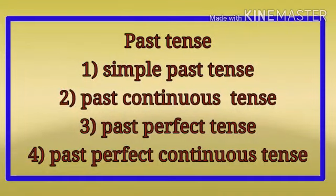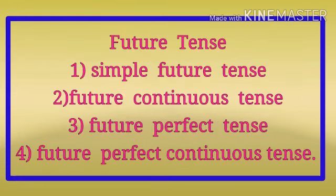Similarly, Past Tense has four sub-types: Simple Past Tense, Past Continuous Tense, Past Perfect Tense, and Past Perfect Continuous Tense. Future Tense also has four sub-types: Simple Future Tense, Future Continuous Tense, and Future Perfect Tense.